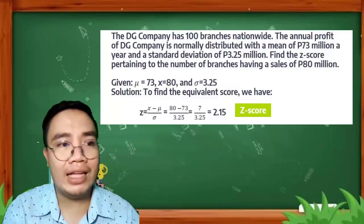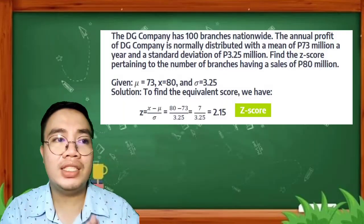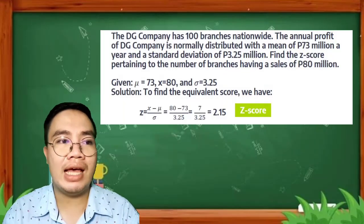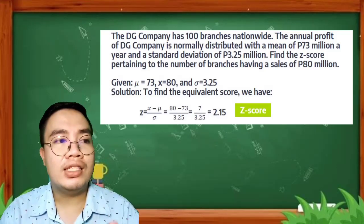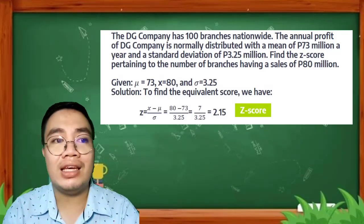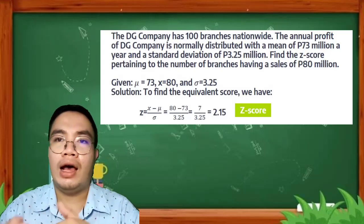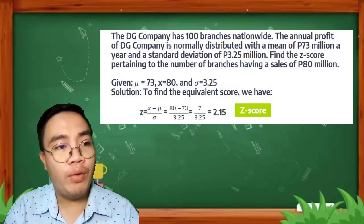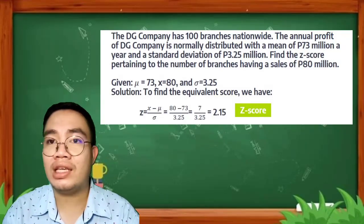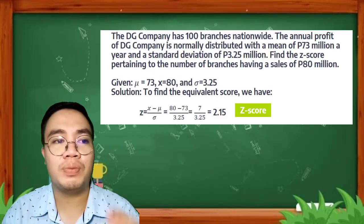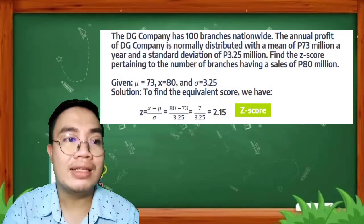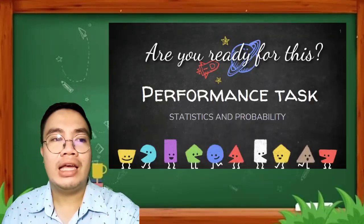If we try to look back again to our problem from the DG Company problem, that means the value of 80 is 2.15 Z-score away from our mean, or that is equal to 98.42%. Those are the data which lie in our given value.